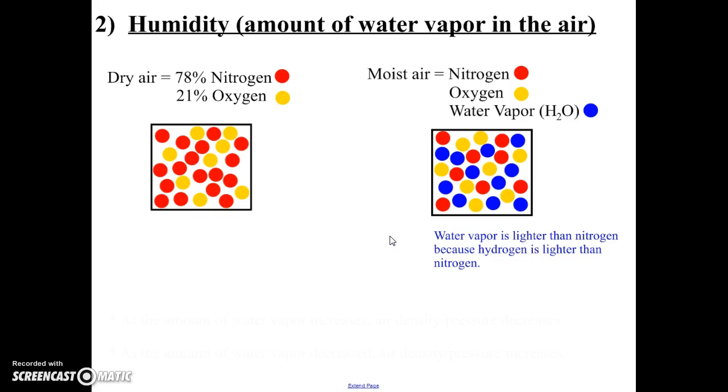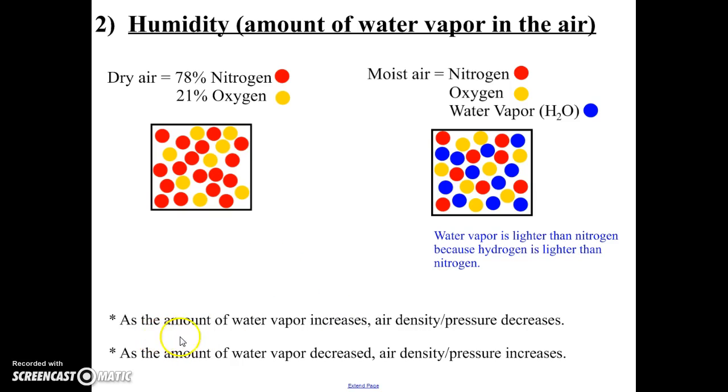Like I just said, water vapor is lighter than nitrogen because the hydrogen is lighter. If air is lighter, it can't exert as much force or as much pressure. So if the amount of water vapor increases, if there's more water vapor, it means the density and the air pressure will be lower because the water vapor has hydrogen, which is lighter.